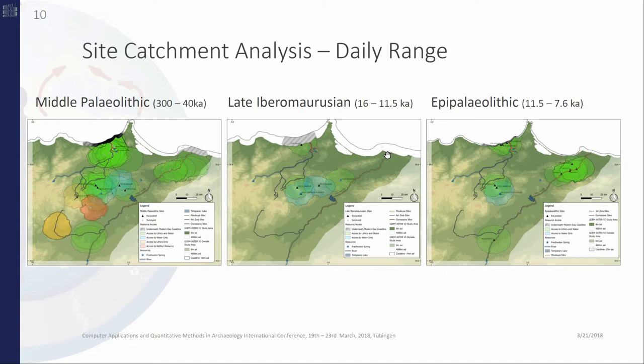In the Ibero-Maurusian, all sites have similar economic potentials, similar resource accessibility, but interestingly they're not settled directly at the resources like they were in the Middle Paleolithic, but always a good distance away. They had to travel up to or a little more than four hours to get lithics or water.